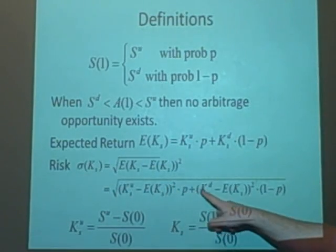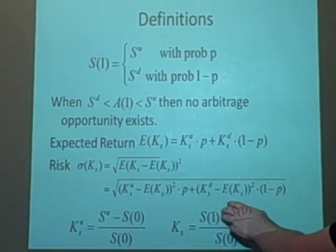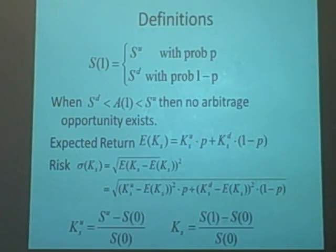But then this can expand to be a bit easier to calculate as the square root of KUS minus the expected value of KS, all of this squared times the P, plus KSD the down part minus expectation of KS all squared times 1 minus P.